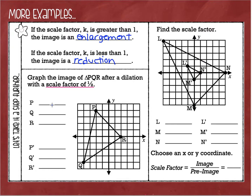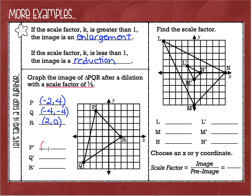We're going to start out by listing our original ordered pairs. The original coordinate for point P is (-2, 4), point Q is (-4, -4), and point R is (2, 0). Now I'm going to apply my scale factor of one-half, so I'm going to take all of these x and y values and multiply them all by one-half. Multiplying by one-half is the same as dividing by 2.